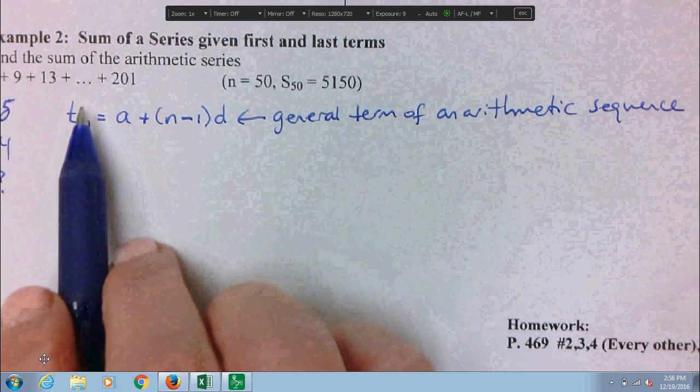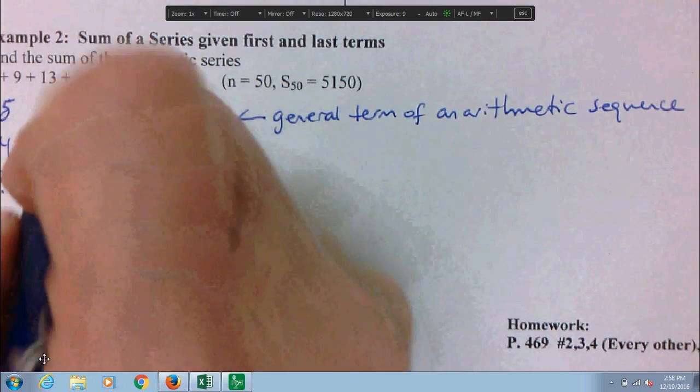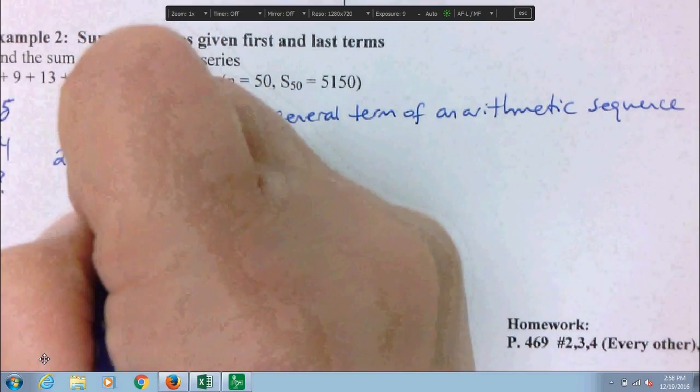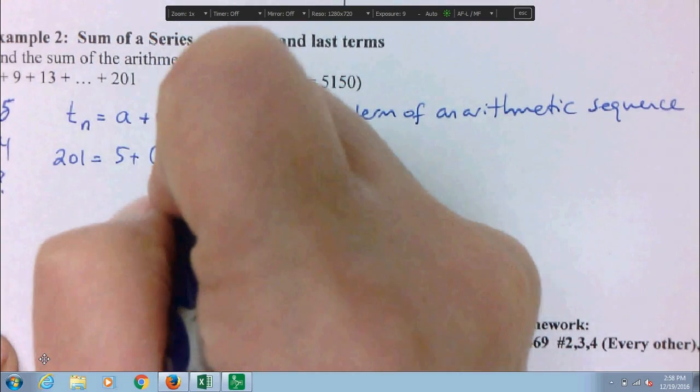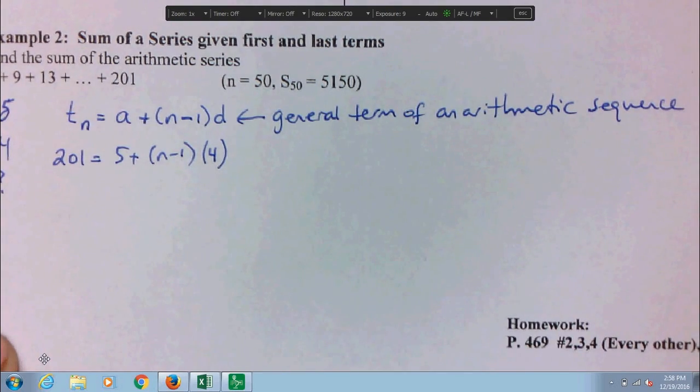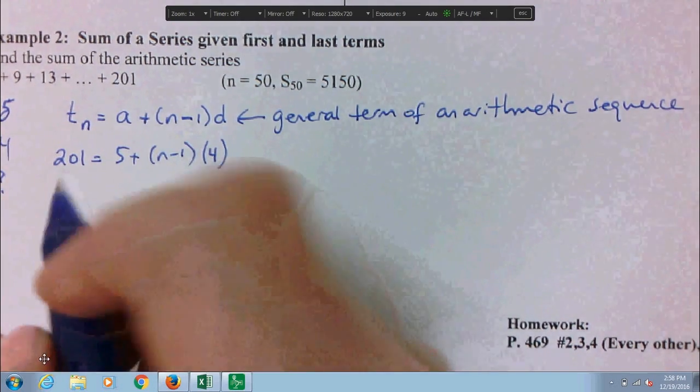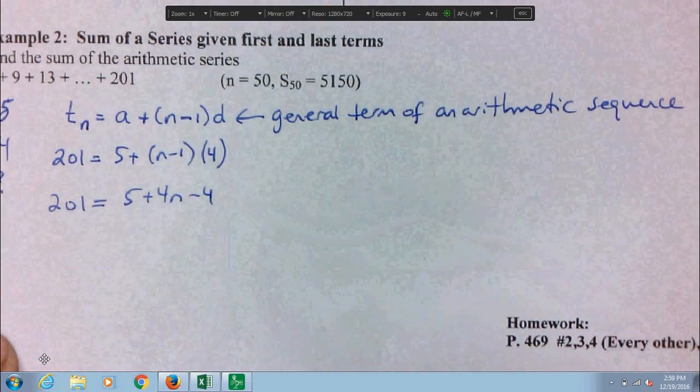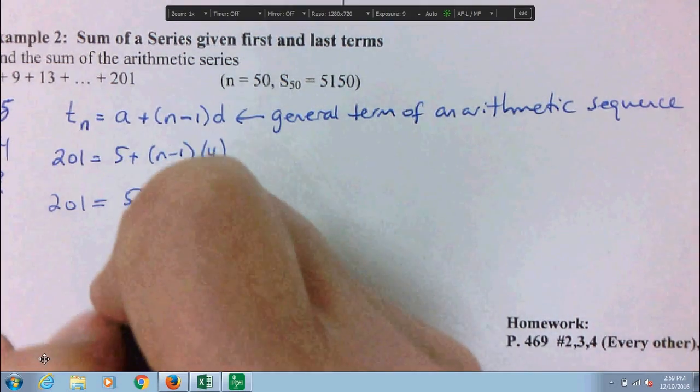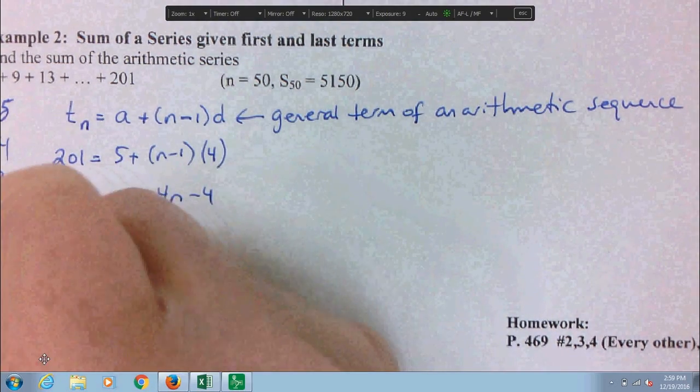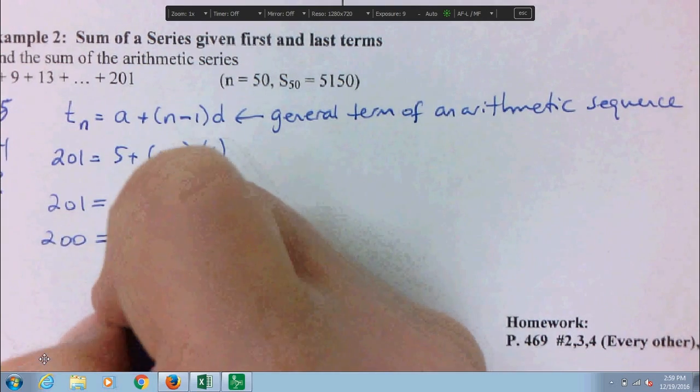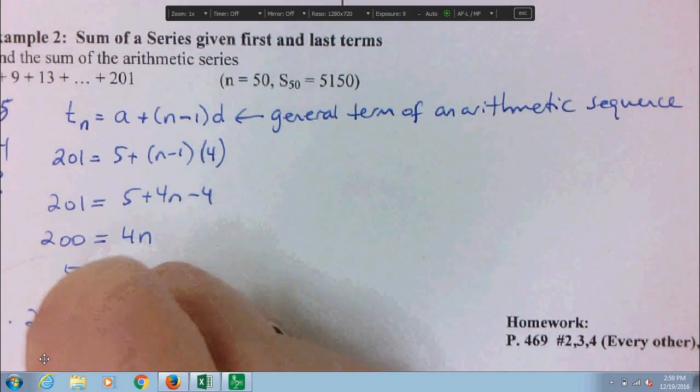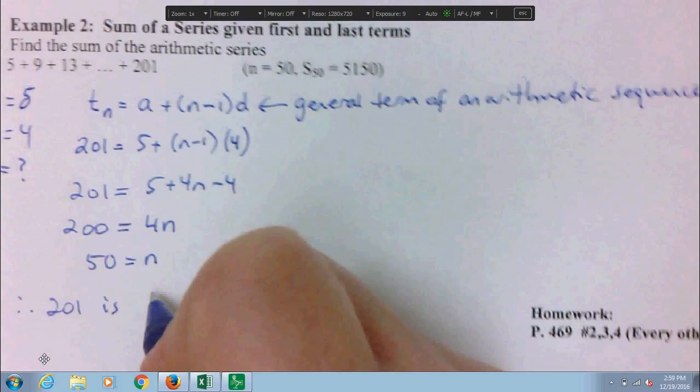Why did we do this? Because we're trying to solve for the n. Tn, the term in position n is 201. And that is going to equal 5 plus n minus 1 times 4. We can solve this now to see which term number is 201. So 201 equals 5 plus 4n minus 4. This becomes 1 on this side. Move it over. So I'm just skipping a step. 200 equals 4n. And so 50 equals n. Therefore we know 201 is the 50th term.